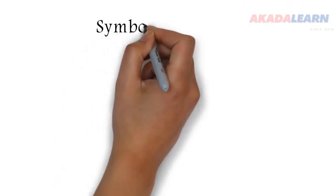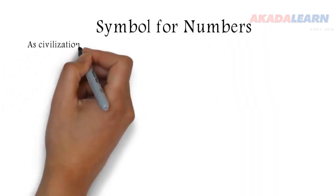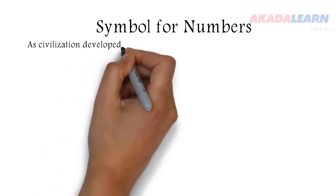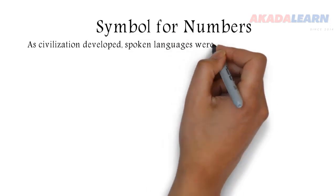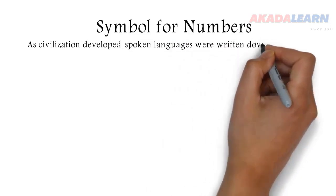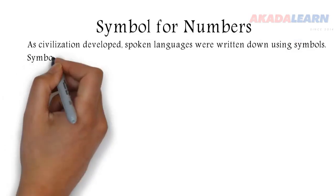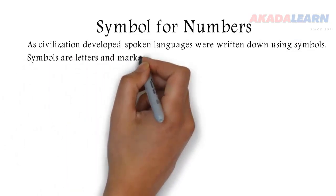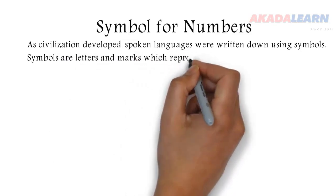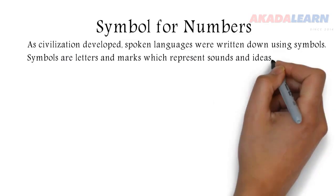We'll now look at symbols for numbers. As civilization developed, spoken languages were written down using symbols. Symbols are letters and marks which represent sounds and ideas.